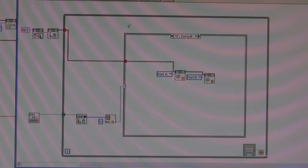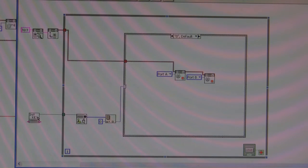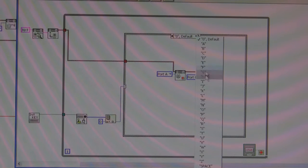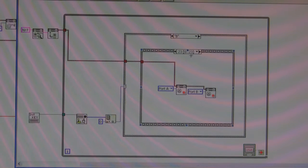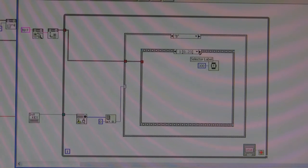So this is the code that controls our writing program. We have the keyboard controlling this case structure, so that if you push any of these letters, it will go to a predetermined flat sequence that will go through the steps to write that letter.